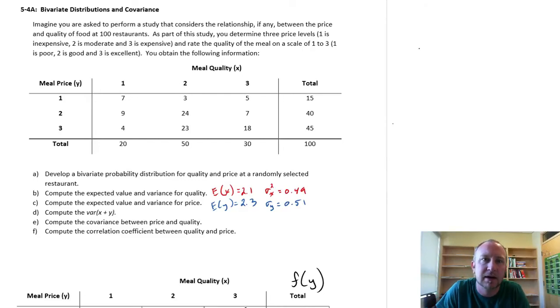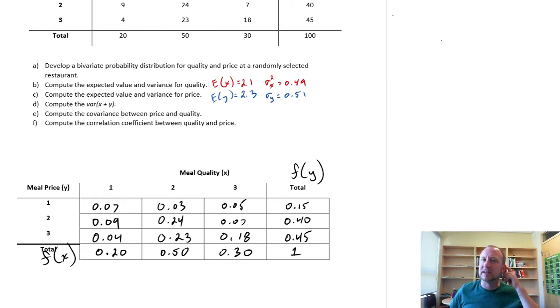Hello, welcome back. So here we are back on this bivariate distribution and covariance problem. We have already put together our bivariate probability distribution for part A, and we already calculated for parts B and C the expected value and the variance for both quality and price.